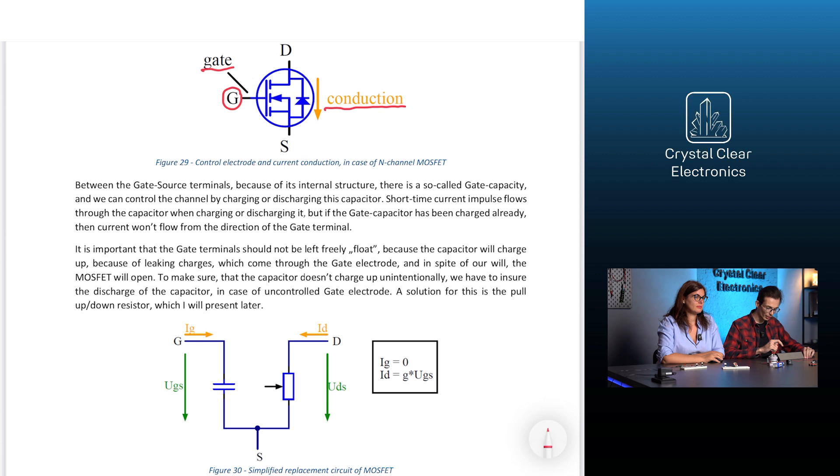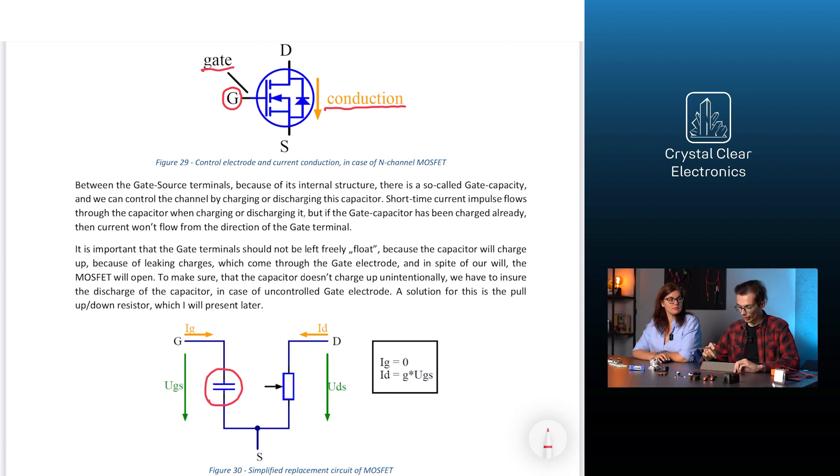Between the gate and source terminals, because of its internal structure, there is a so-called gate capacity, and we can control the channel by charging or discharging this capacitor. Short-time current impulse flows through the capacitor when charging or discharging it, but if the gate capacitor has been charged already, then current won't flow from the direction of the gate terminal.